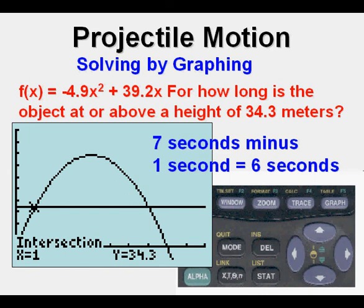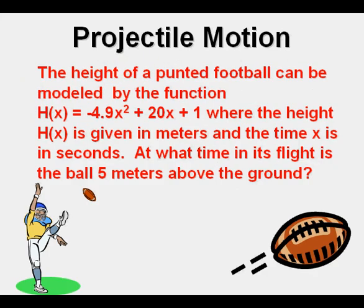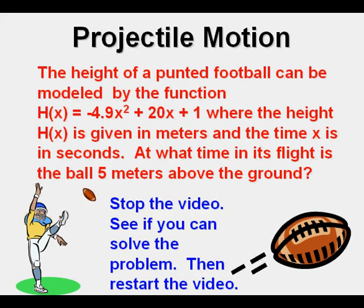Now we have another problem. Height of a punted football can be modeled by this function H of x equals negative 4.9 x squared plus 20 x plus 1, where the height H of x is given in meters and the time x is in seconds. At what time will its flight be 5 meters above the ground? Stop the video, see if you can solve the problem, then restart it.